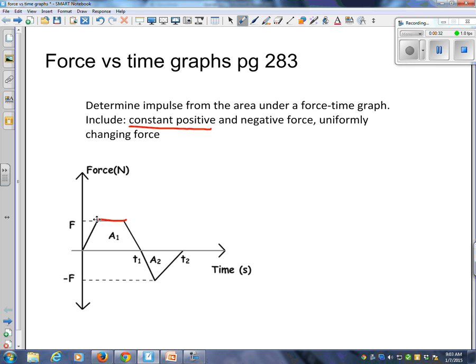Constant negative? I do not have constant negative on that graph. But if I did, it would be like this, right? And if it was uniformly changing?